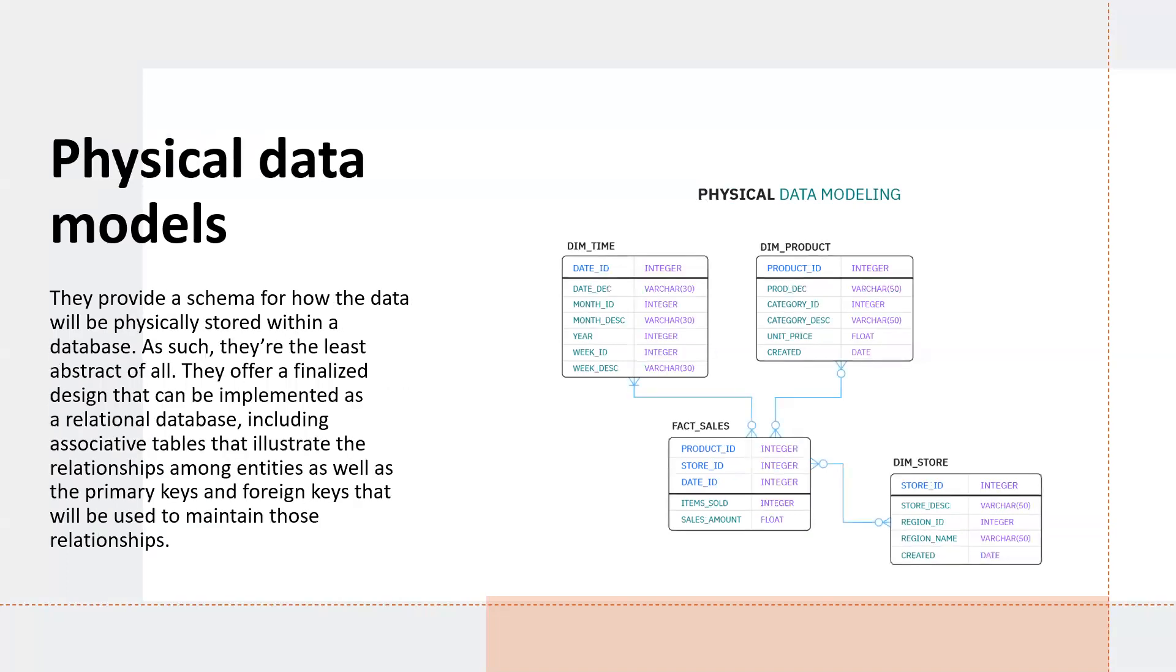Physical data models provide a schema for how the data will be physically stored within a database. They are the least abstract of all. Physical data models offer a finalized design that can be implemented as a relational database, including associative tables that illustrate the relationships among entities.